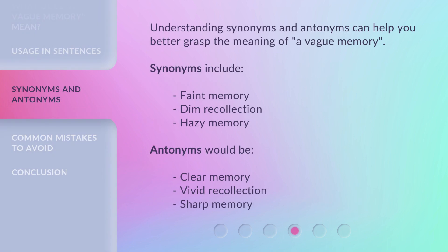Understanding synonyms and antonyms can help you better grasp the meaning of a vague memory. Synonyms include faint memory, dim recollection, and hazy memory. Antonyms would be clear memory, vivid recollection, and sharp memory.